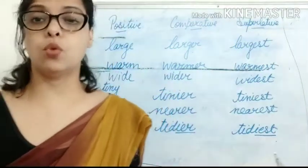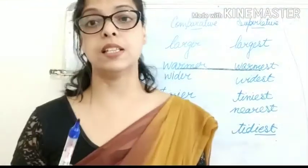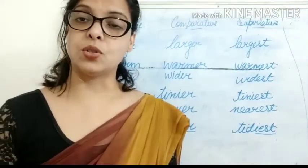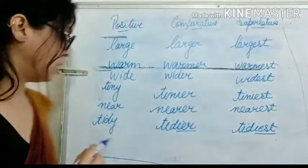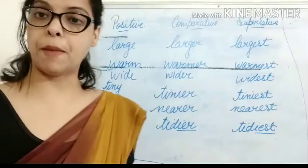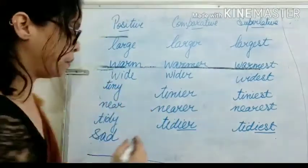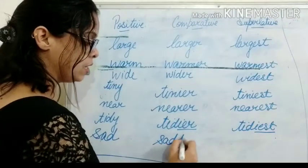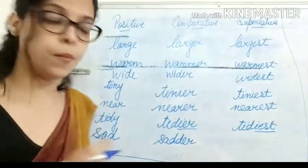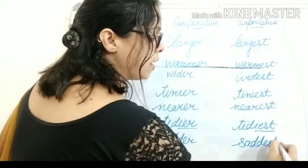I want to tell you one more thing: in some adjectives, the last letter is doubled. As in the example — 'sad.' When you make the comparative and superlative forms, you double the last letter. So sad becomes S-A-D-D-E-R, 'sadder' — D is doubled. And 'saddest': S-A-D-D-E-S-T.